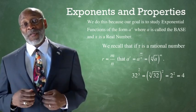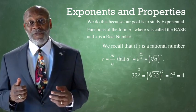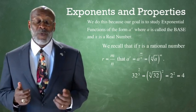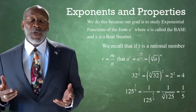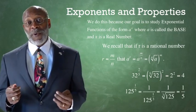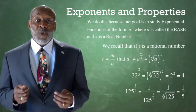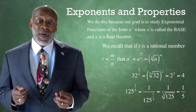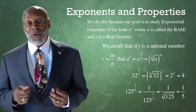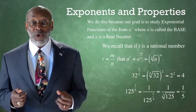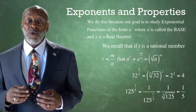The 5th root of 32 is equal to 2. So when we raise the 5th root of 32 to the power 2, we get 2 squared, which equals 4. Similarly, 125 raised to the power negative 1 third equals 1 over 125 raised to the positive 1 third, which is 1 over the cube root of 125, which equals 1 over 5.